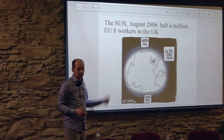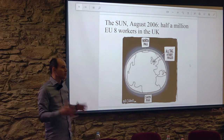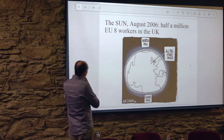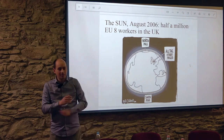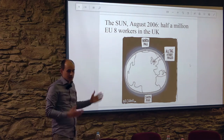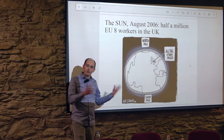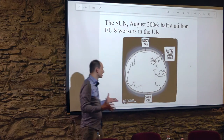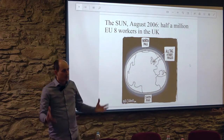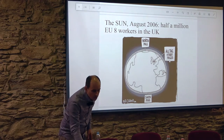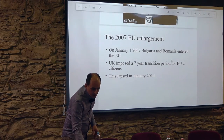This is a cartoon from a British tabloid published in August 2006, about two years after the accession — I bought this newspaper at the time and still have it at home. From the British perspective, migration from Central and Eastern Europe translates into migration of the Poles. We will see why: Poland is the biggest of the Central and Eastern European countries, and that's why Poles were the most visible.